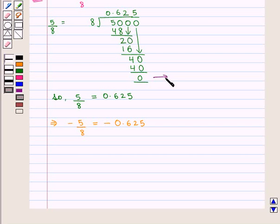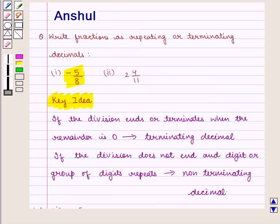So we get the remainder as 0, so division ends. Therefore we can say it is a terminating decimal.